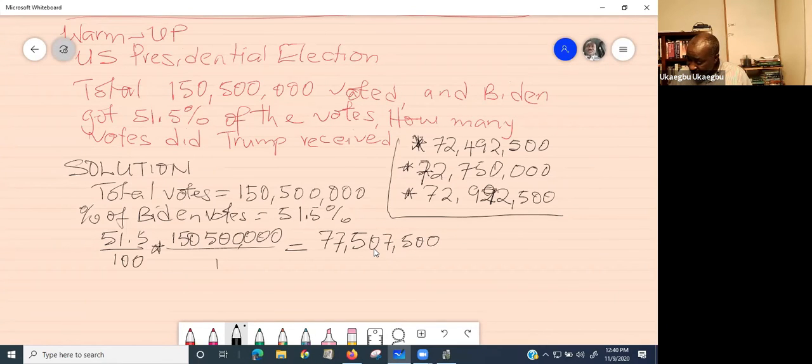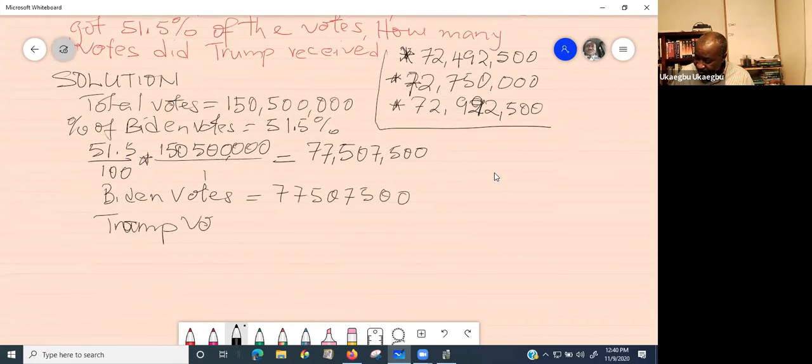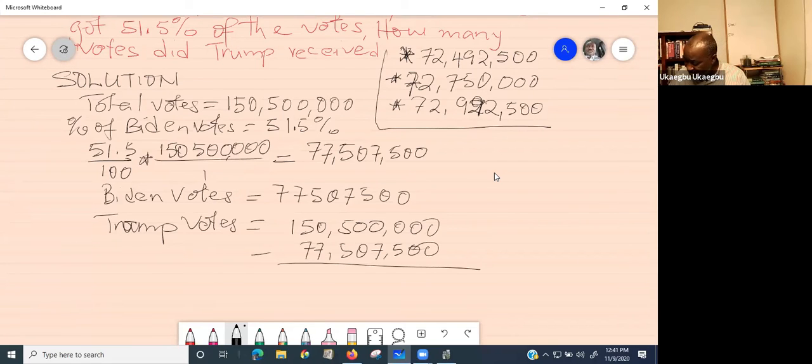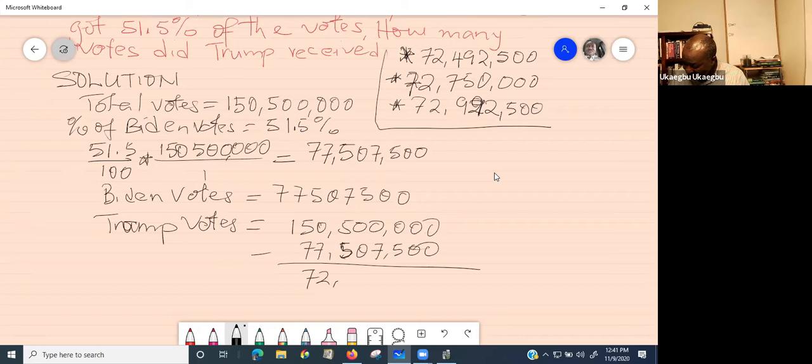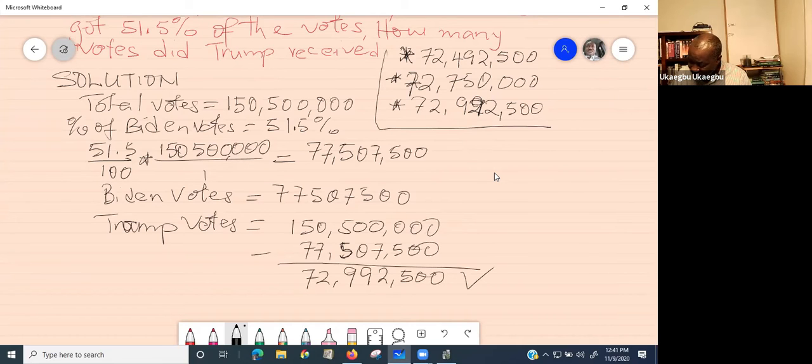To get the Trump vote, Biden votes equal 77,507,500. Trump votes would be 150,500,000 minus 77,507,500. Using calculator: 72,992,500. So that's the Trump votes. That's the solution.